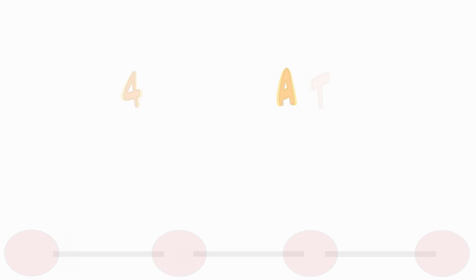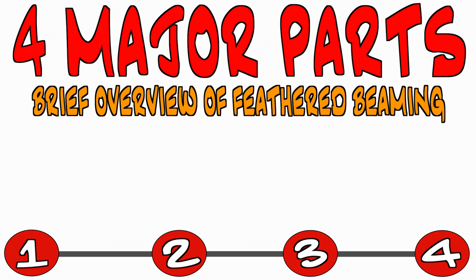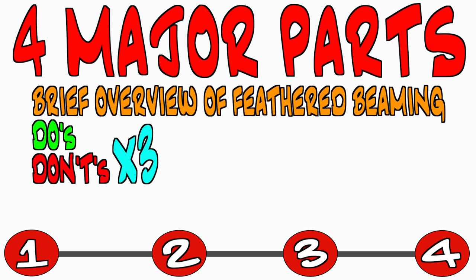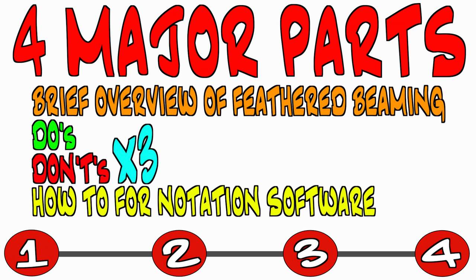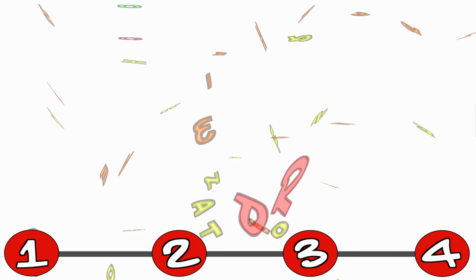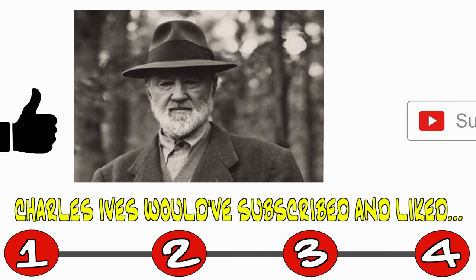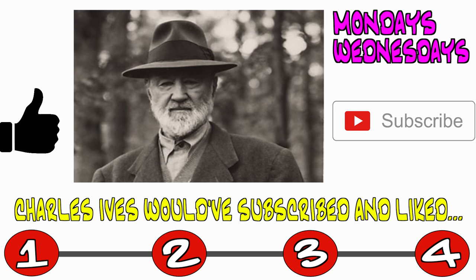This video is going to be divided into four major parts. The first being a brief overview of what exactly feathered beaming is, followed by a do and don't section each containing three do's and don'ts. And lastly, a very short how-to for Finale and Sibelius so you can execute this technique seamlessly upon completion of this video. Be sure to hit like and subscribe to learn more about composition with us on Mondays, Wednesdays, and Fridays.